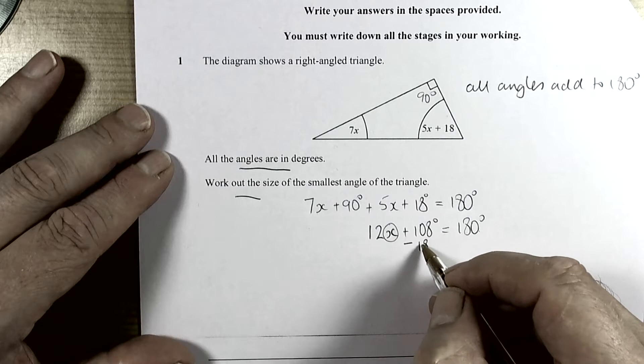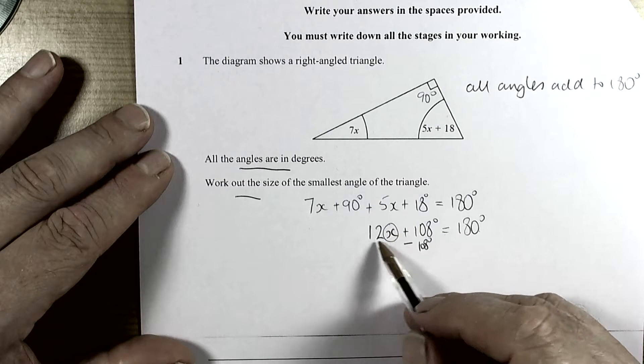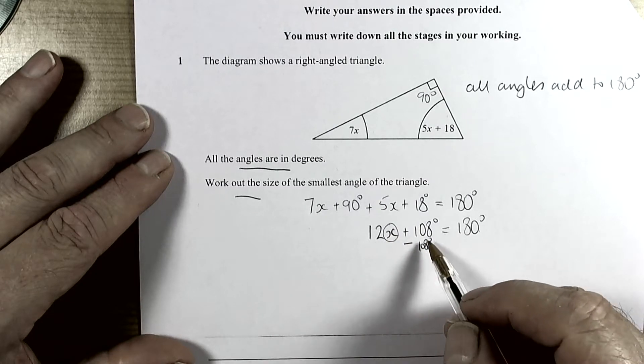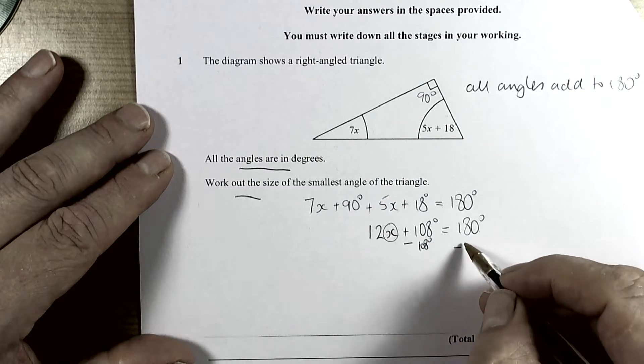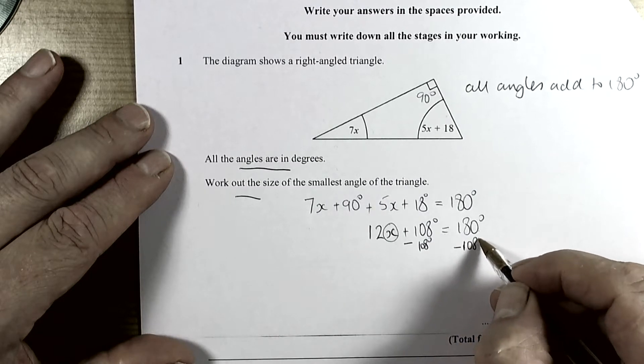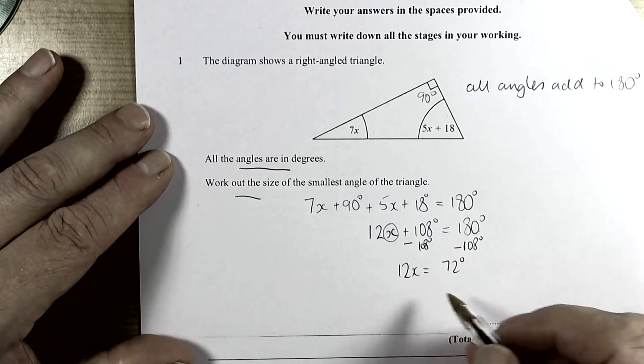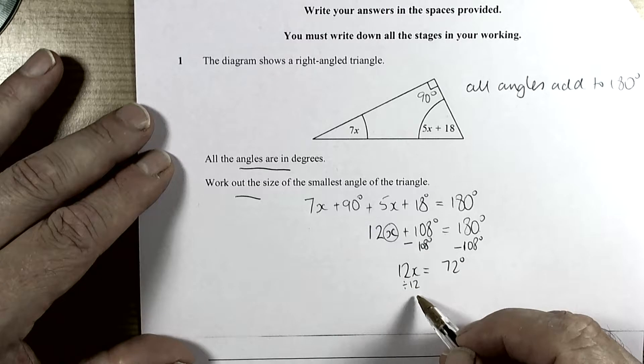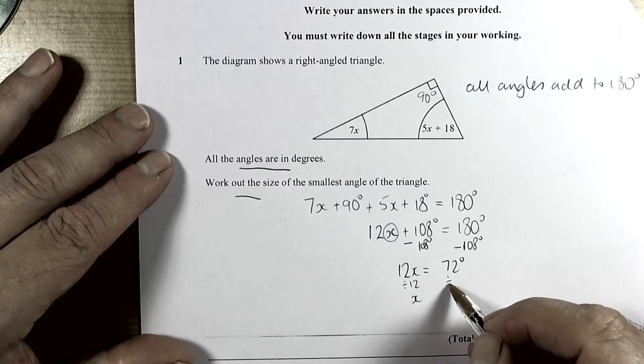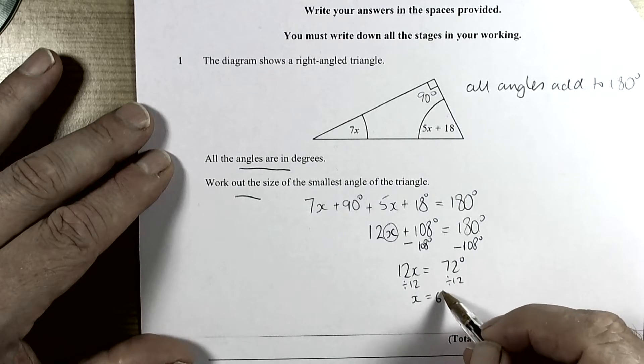To move things we do the opposite operations. We're going to move the 108 first because that's separate to the term involving the letter we want to find. 108 take away 108 is 0, so that's worked, but we have to balance it because of the equals and do the same to the other side. We're left with 12x equals 72 degrees. We want a single x so we divide by 12 to get 1x, but we need to divide both sides by 12 to balance. So x is worth 6 degrees.